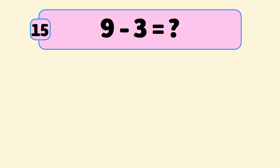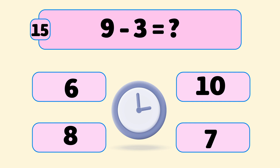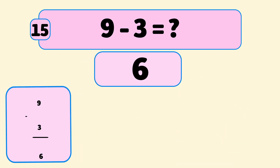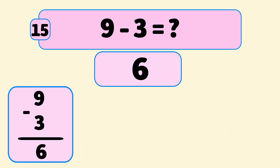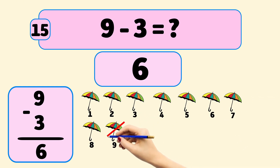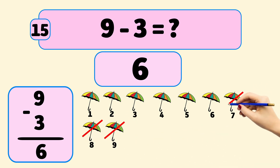What is 9 minus 3? The answer is 6. We start with 9 umbrellas and remove them one by one: 9, 8, 7. Now we have 6 umbrellas left.